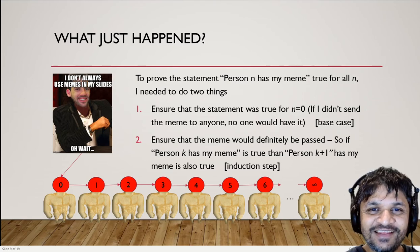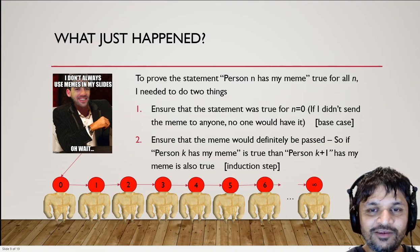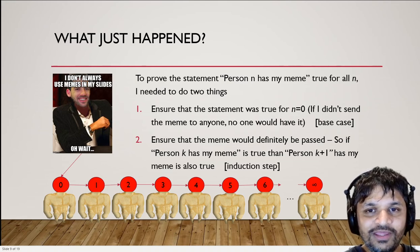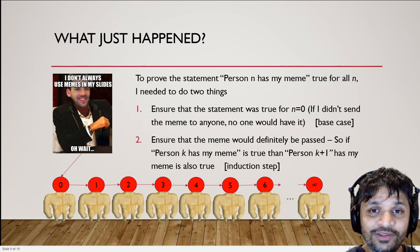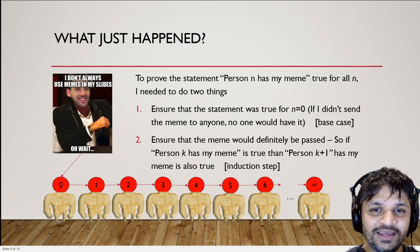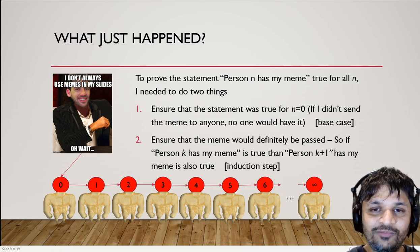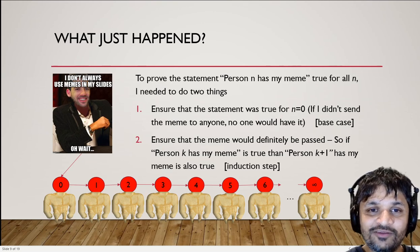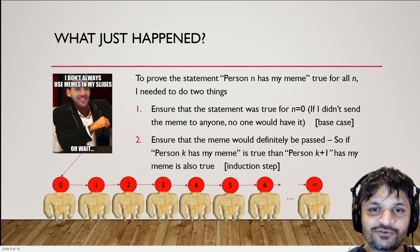So to get the statement 'person n has my meme' to be true for all n, I needed to do two things. First, I had to send the meme to somebody — I had to ensure the statement was true for n equals 0. That meant sending my meme to person 0. In induction, this is called the base case, and it gets me sort of halfway there.